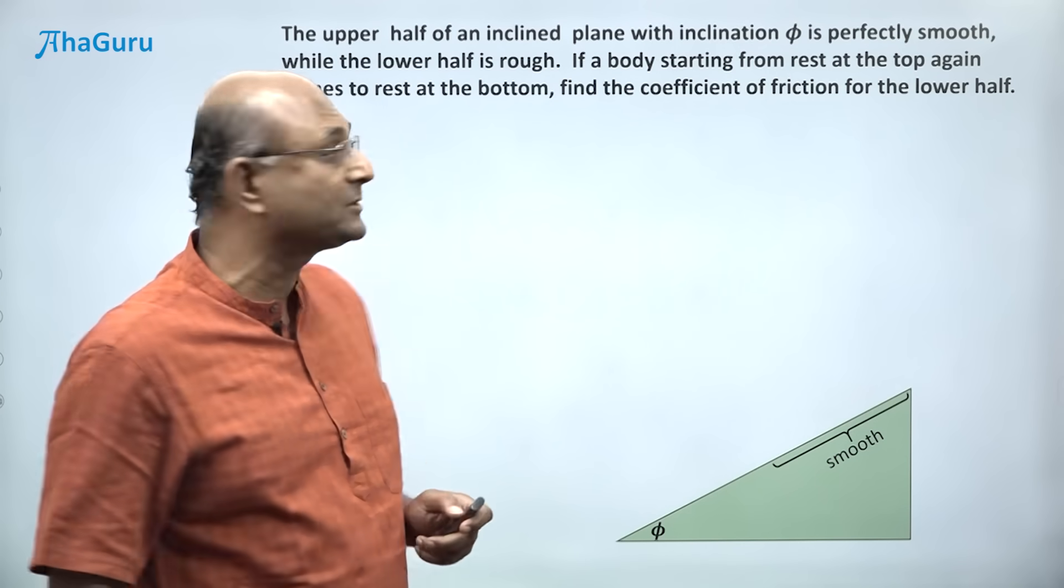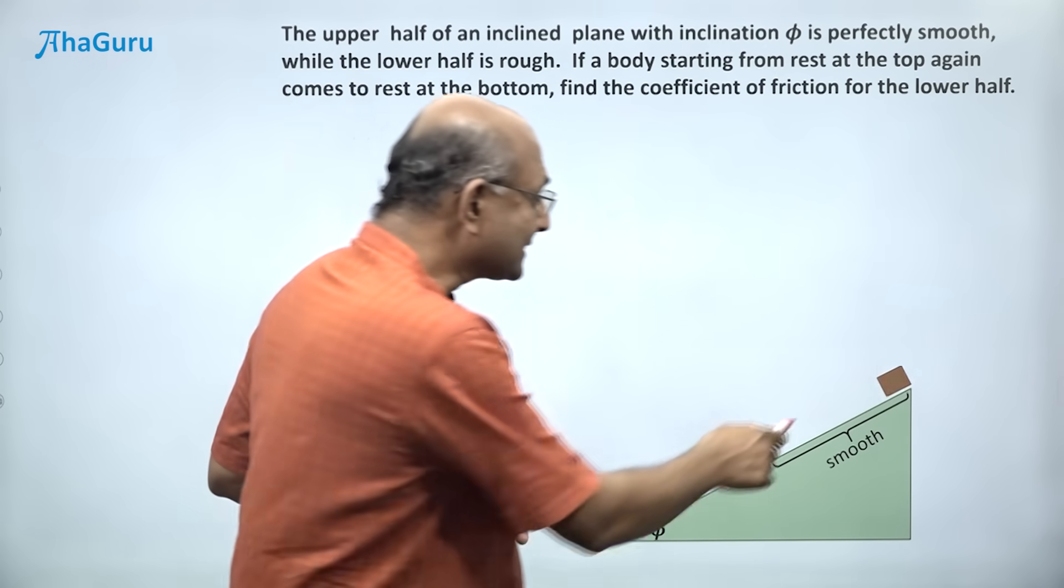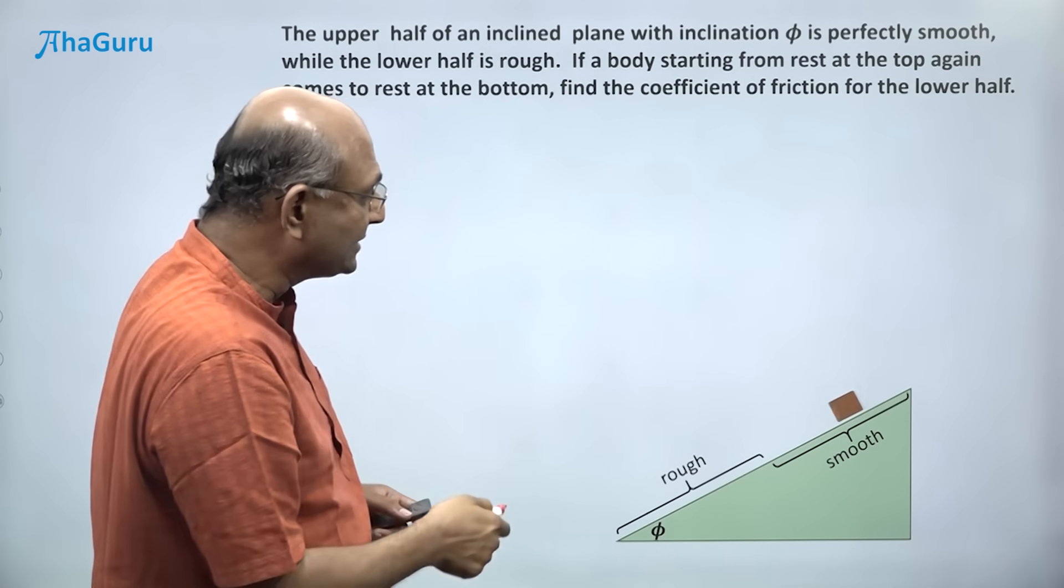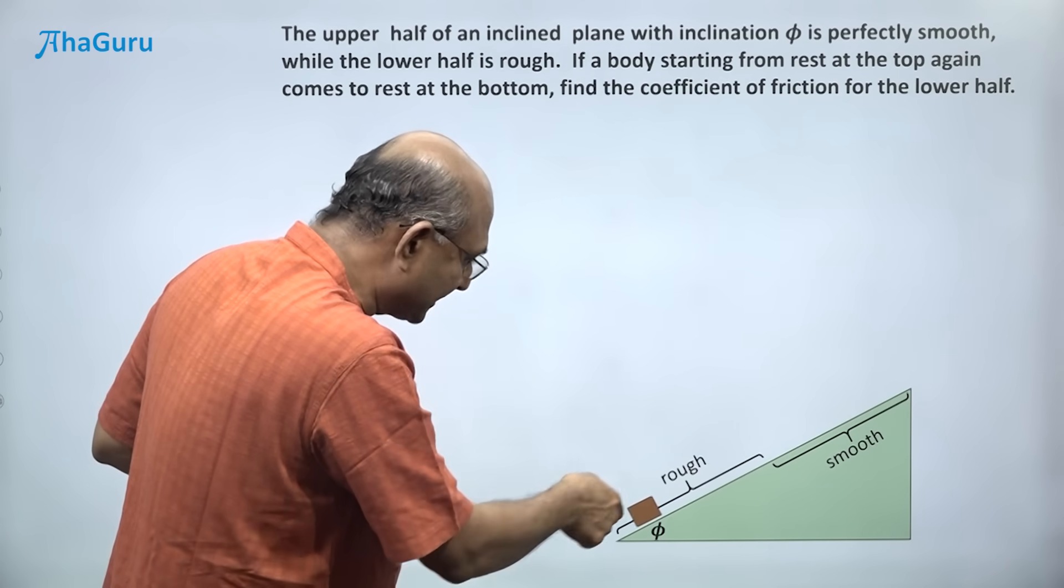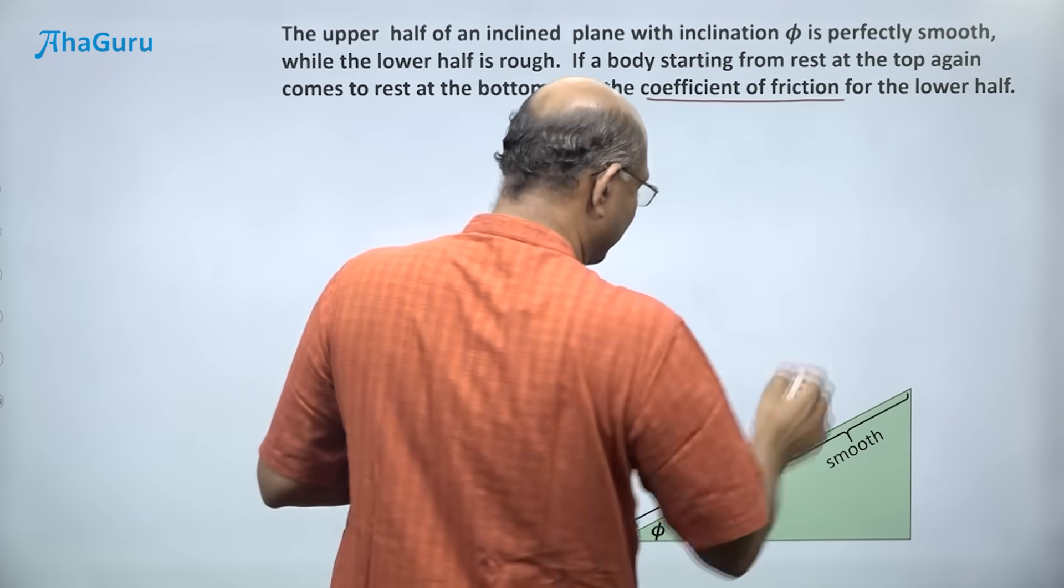The upper half is perfectly smooth while the lower half is rough. So this part is rough. A block starts from rest, slides down, and then because of friction it slows down to rest. We want to find the coefficient of friction for this rough portion.